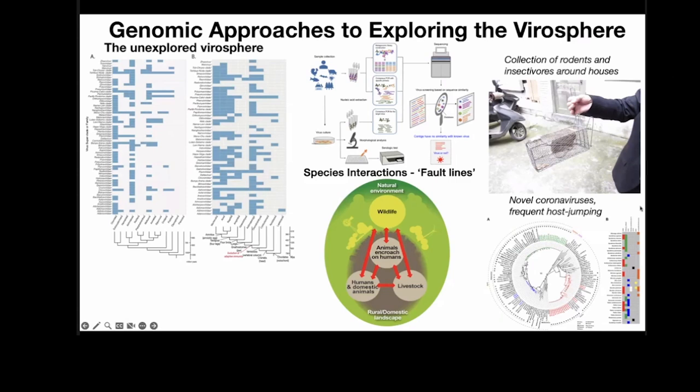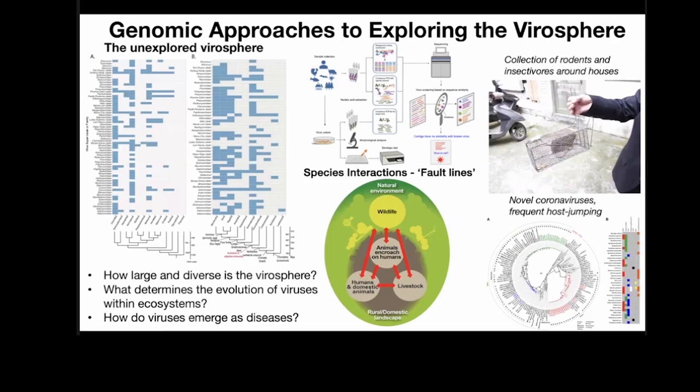The questions my research is directed to are: how large and diverse is the virus sphere? What determines the evolution of viruses, particularly within ecosystems? When you sample animal species, they don't just have one virus — they have a whole ecosystem of viruses that interact. And how often do viruses emerge to become disease-causing agents, like in the case of SARS-CoV-2?